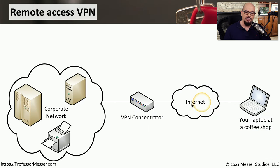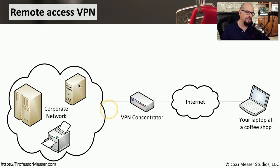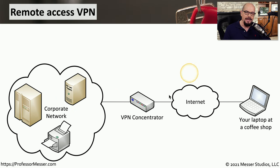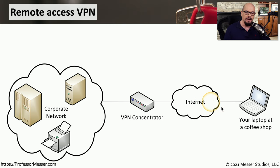With a VPN, you might be at home, at a coffee shop, at a hotel, or some other place, and you need to access resources that are inside of your corporate network. But if you access those directly across the internet, anyone on the inside of the internet or listening in to the conversation would be able to see this information being sent back and forth.